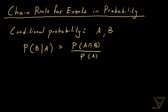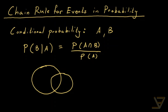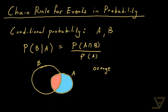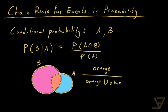There's a nice visual way of representing this. Suppose we have event B here and event A over here. Then B intersect A is this region here, and A is this region here plus the orange region. So what we're looking at is orange divided by orange union blue. We don't care about the pink region over here because it's irrelevant — it doesn't lie inside A. We're restricting B to those parts of B that are in A.